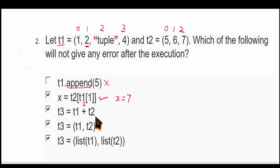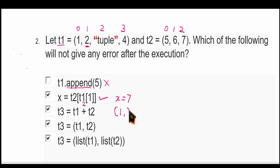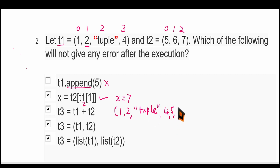Now T3 is equal to T1 plus T2. Two tuples can be added or appended like this — that means they will become a single tuple: 1, 2, 4, 5, 6, 7. So it will be a single tuple. This will also work and will not give any error.